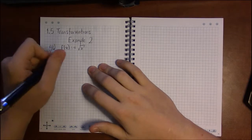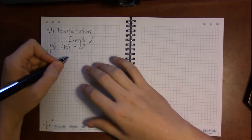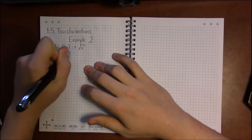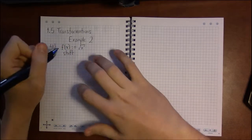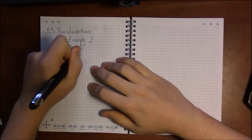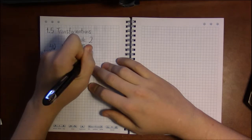So we're supposed to transform f of x here, which is defined to be square root of x, and we're supposed to shift this left three units. So shift this left by three.